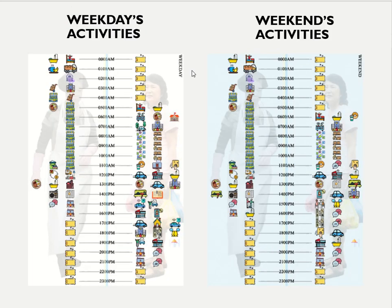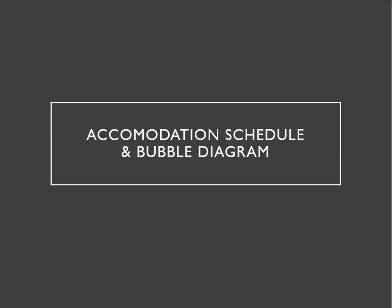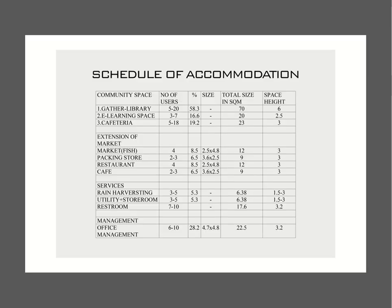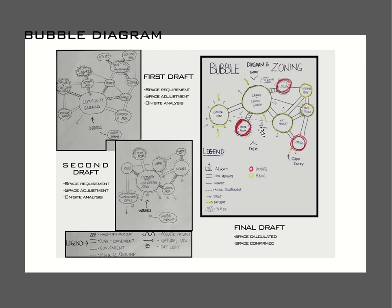This is the comparison of the two different users. And this is the accommodation schedule and the bubble diagram. This is my SOA, showing the type of space. And for the bubble diagram, it is showing the space arrangement.